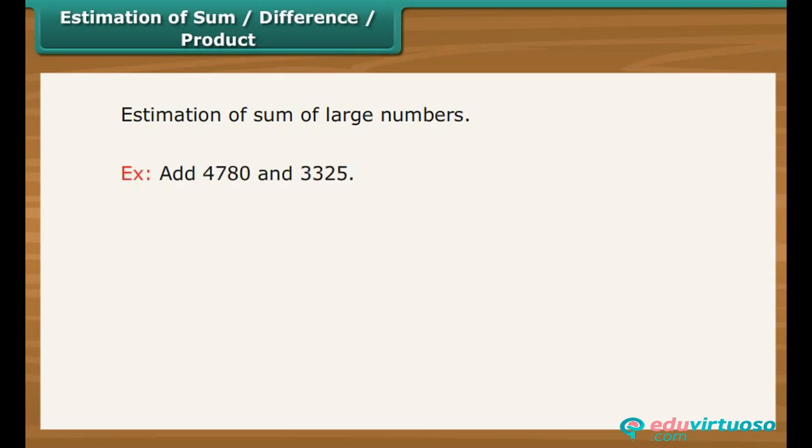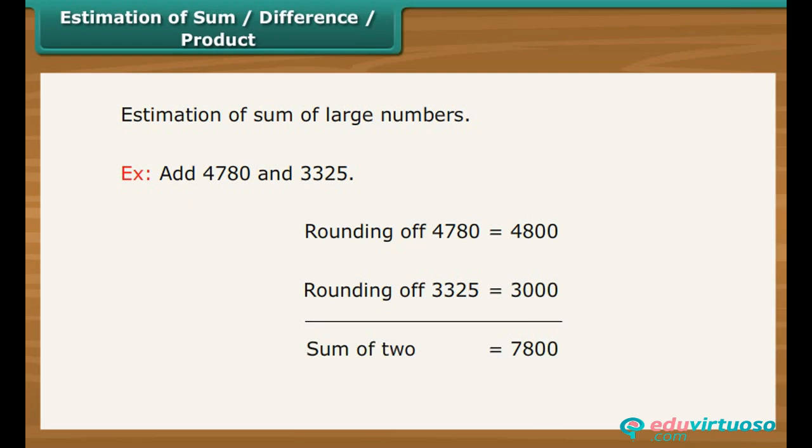For example, add 4,780 and 3,325. Rounding of 4,780 would make it 4,800. Rounding of 3,325 would make it 3,000. Sum of the two: 7,800.